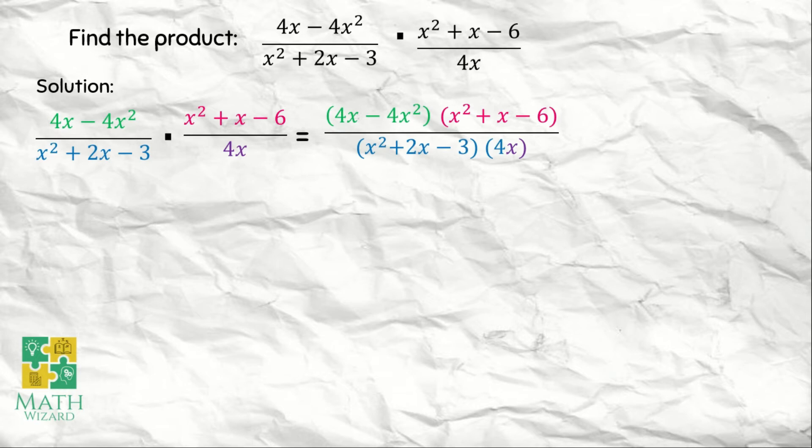After that, we need to factor each monomial and polynomial. If you want to learn more on how to factor monomials and polynomials, the link is available in the description below. So 4x minus 4x squared becomes 4x times the quantity of 1 minus x.